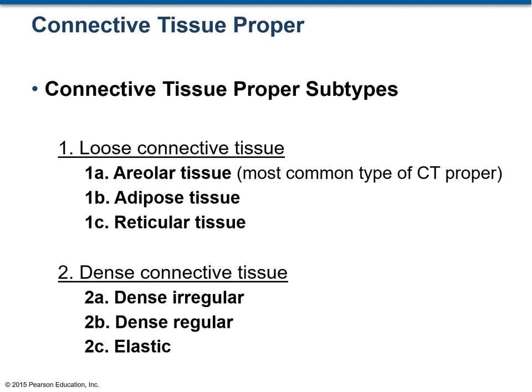Connective tissue proper can be further classified into loose connective tissue proper and dense connective tissue proper. Loose connective tissue has three categories: areolar, adipose, and reticular tissues. Dense connective tissue also has three categories: dense irregular, dense regular, and elastic tissues.